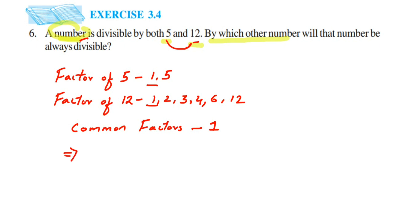So which means 5 and 12 are co-prime. We know that co-prime numbers are the numbers where the common factor is 1. So if the number is divisible by co-prime numbers,